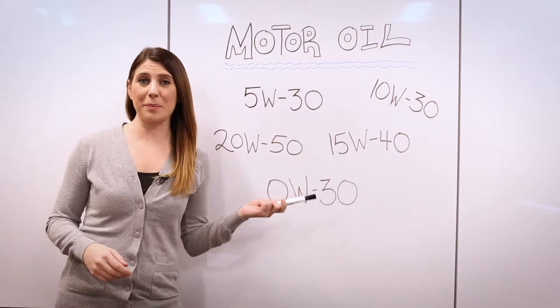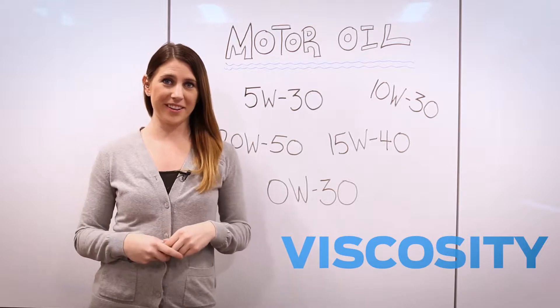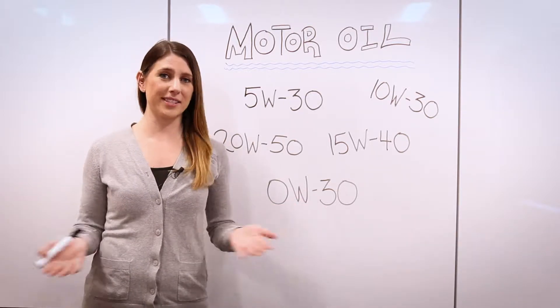Well, simply put, these numbers represent the viscosity of the oil. Or in other words, how thick or thin the oil is and how easily it flows.